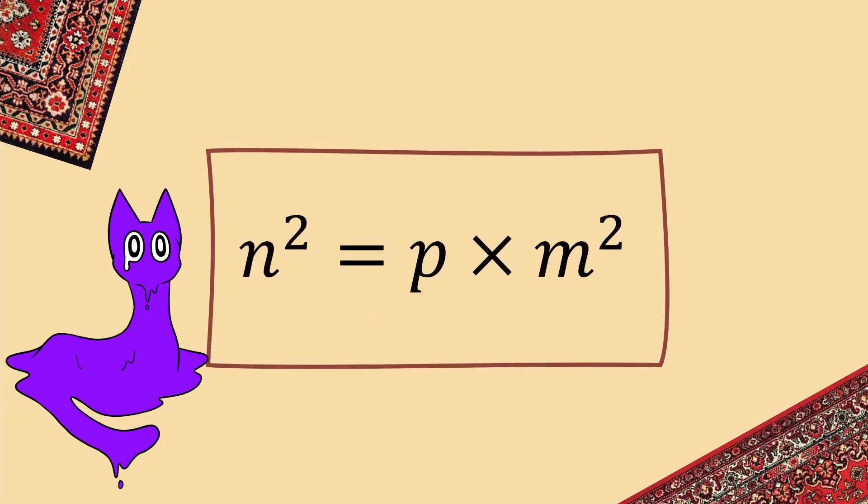It's pretty easy to prove this for any prime number, really. The maths always works out the same. So, let's set n squared to be a prime number times m squared.